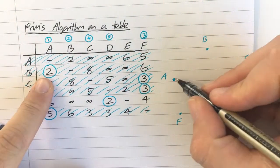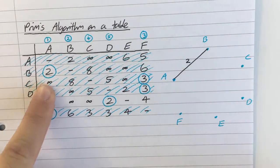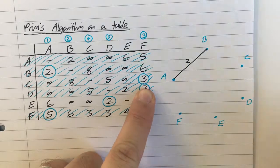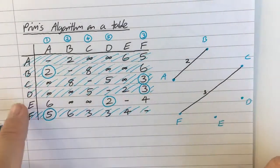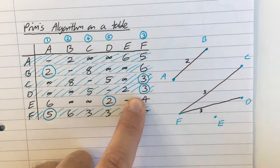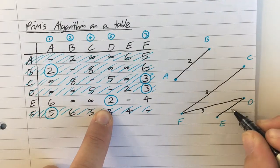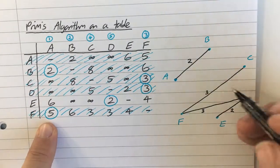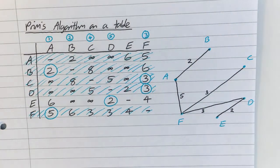And A connects to B by a distance of 2. Okay, it's been circled, so I've selected that arc. F connects to C by a distance of 3. F connects to D by a distance of 3. E connects to D by a distance of 2. And F connects to A by a distance of 5. And we can see that that tree has indeed spanned the entire network.